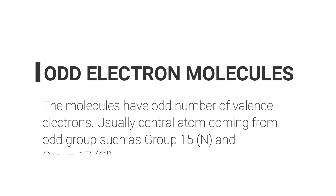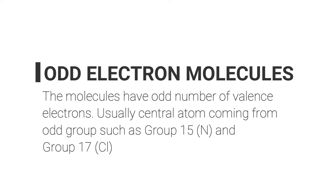The third exception to the octet rule is the odd electron molecule. In this case, molecules have an odd number of electrons, and usually the central atoms come from odd-numbered groups — for example, Nitrogen from group 15, and Chlorine from group 17. Let's have a look at the examples. Here we have Nitric Oxide (NO).